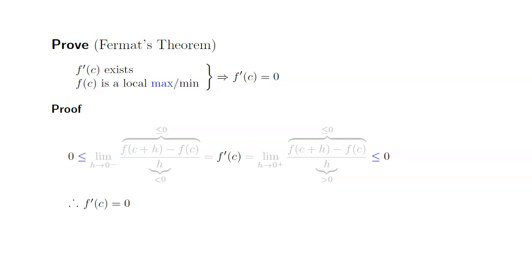How about the local minimum case? What's the difference? The h is the same, but the numerator has to change inequality. So I'm going to flip the inequalities on the numerators.